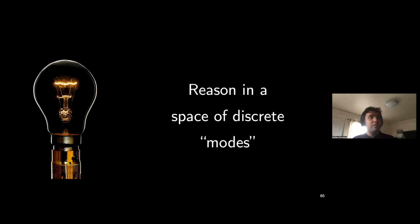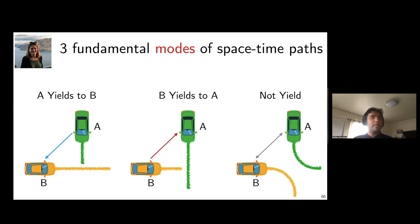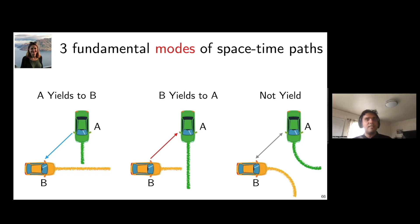What are the modes for self-driving? We define three fundamental modes to describe any interaction: if actors A and B have a conflict and B arrives first, A is yielding to B; if A arrives first, B is yielding to A; and if there's no conflict, neither is yielding. Using this grammar of modes, you can analyze any self-driving interaction.